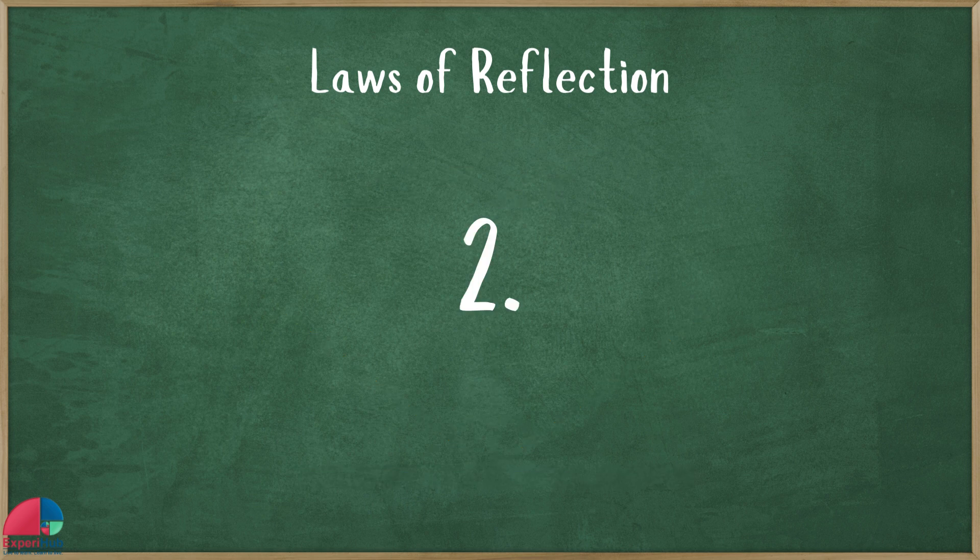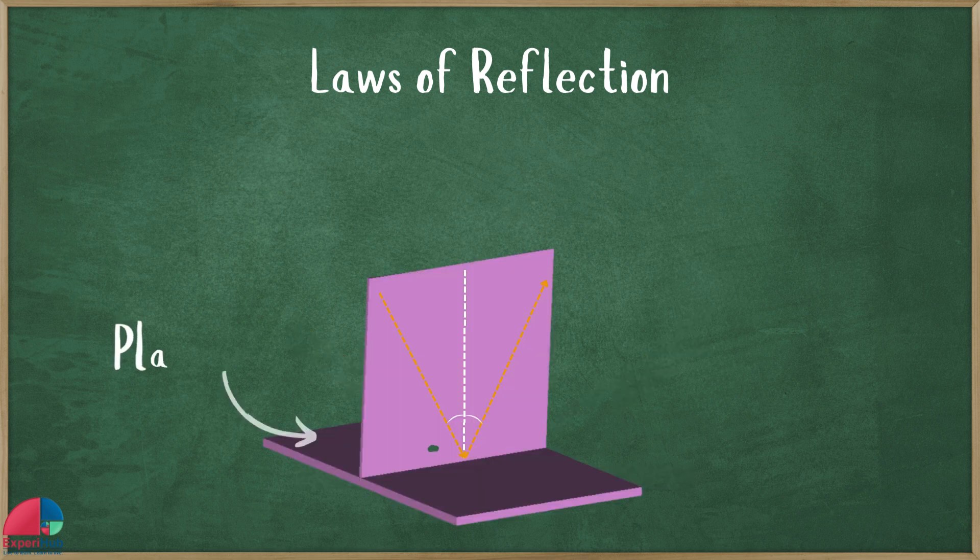Two, the incident ray, the reflected ray, and the normal, a line perpendicular to the point where the light hits, all lie in the same plane.